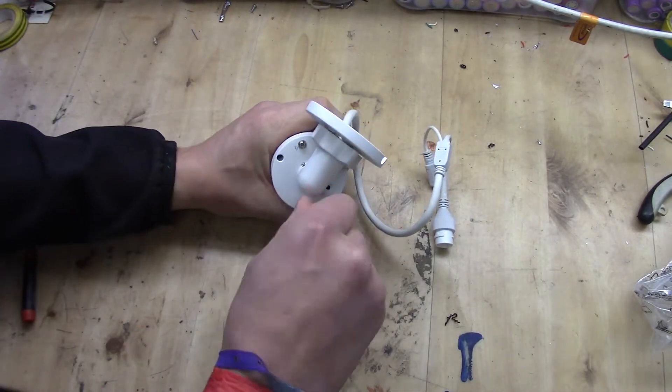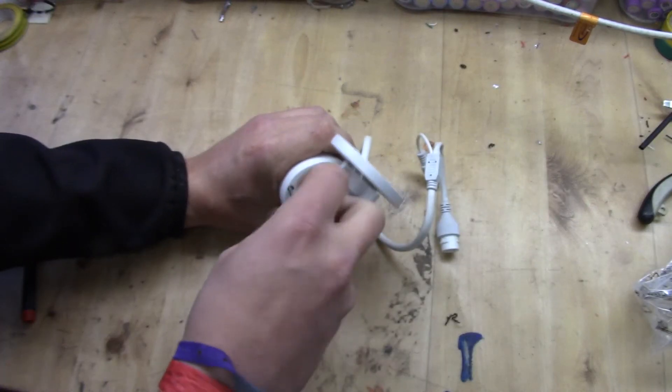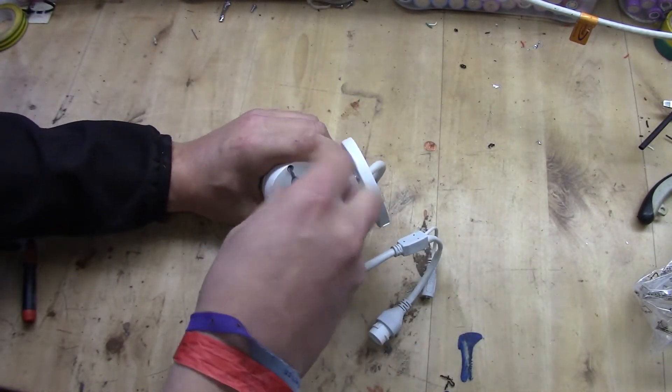First of all, make sure that you can open up the camera. In this case there are three screws that you need to undo. Then you get it open.